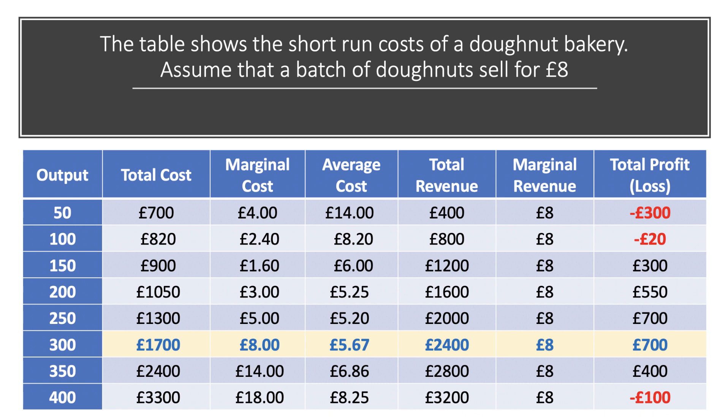The answer is at an output level of 300. At both 250 and 300 units, total profit is calculated to be plus £700. It makes sense to go to 300 units because you can increase market share and sell some extra output as well. So total profit is maximized at £700 in this example — but notice it then tails off quite quickly, and within the space of 100 extra units they've turned a profit into a loss.